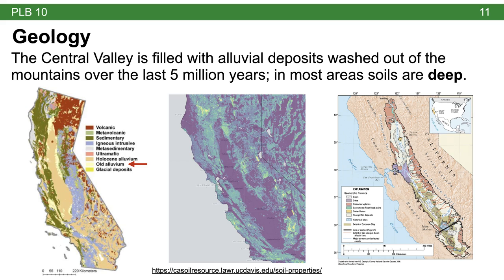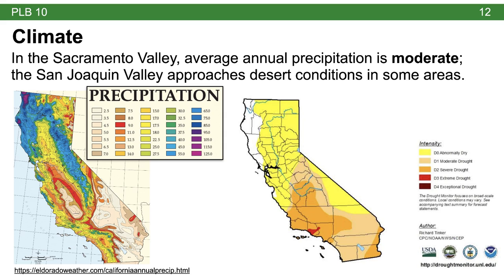It's important to realize that just because the Central Valley is filled with old alluvium doesn't mean the soil is consistent across the valley. There are many places that have differences making them more or less suitable to certain kinds of agricultural crops. California's climate is referred to as Mediterranean — cool wet winters and hot dry summers — but within the state, there is a lot of variation.